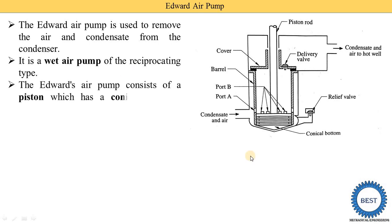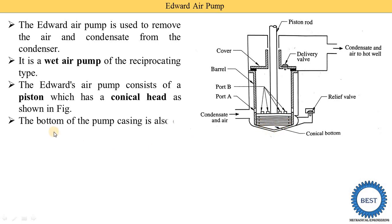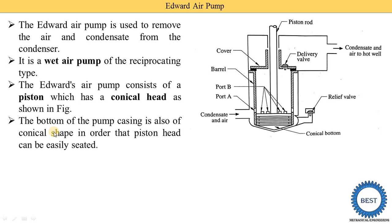The Edward air pump consists of a piston which has a conical head, as shown in the figure. Here you can see this is the figure of the Edward air pump — this component is the piston and the piston head has a conical shape. The bottom of the pump casing is also of conical shape so that the piston head can be easily seated on the casing.